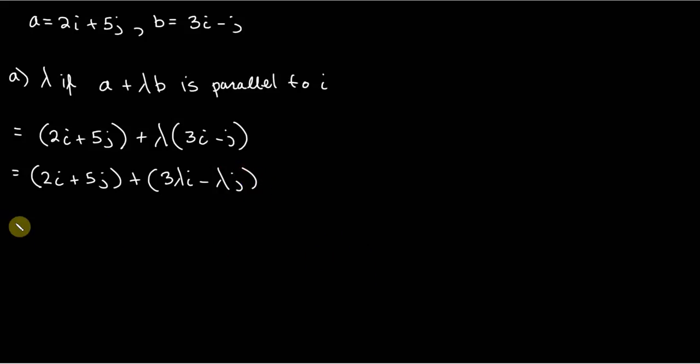So next thing that we want to do, we're just going to reorganize this a little bit. In very simple terms, what we want to do is to collect our i terms and our j terms. So what are our i terms? We've got 2i here, and we've got 3 lambda i here. And it's positive. So we've got 3 lambda i plus, and we've got our j terms. So we've got 5j, that's positive. And we've got a j term here, and it's minus lambda, negative. So minus lambda j.